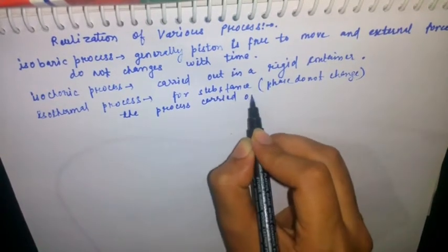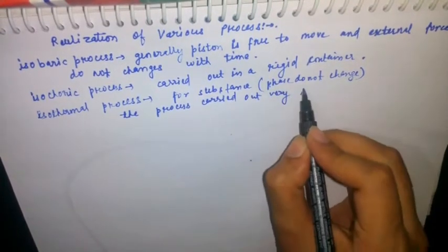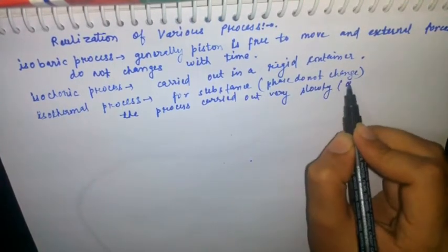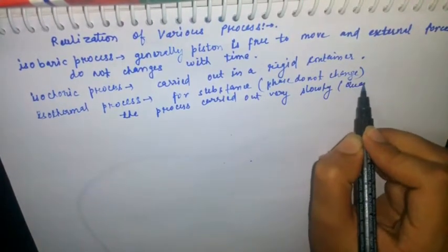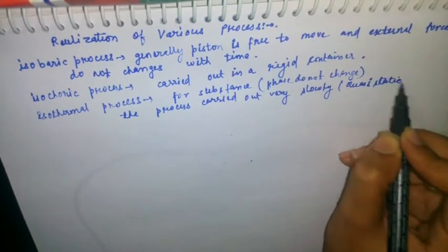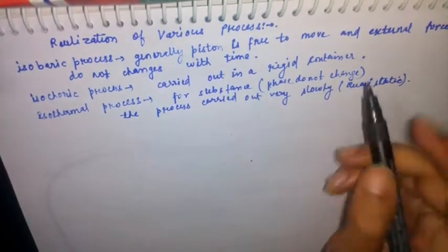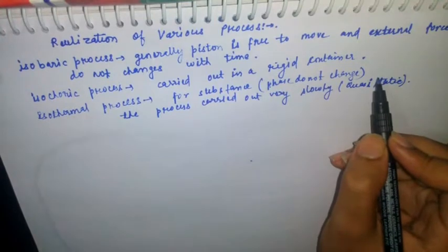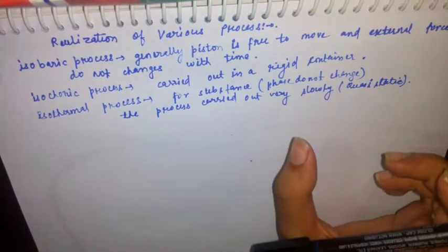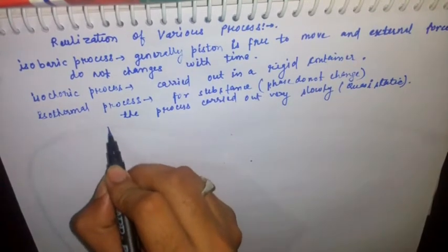For a substance whose phase does not change, the isothermal process is carried out very slowly — you can say it is a quasi-static process. So for substances whose phase does not change, the process is carried out very slowly.